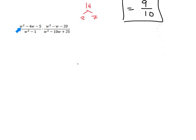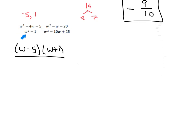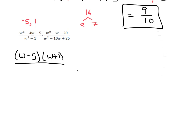Let's look at this first one: w squared minus 4w minus 5. We're looking for factors of negative 5 that are going to add to negative 4. Those factors are going to be negative 5 and positive 1. So this first one is going to factor into w minus 5 and w plus 1. The denominator, w squared minus 1, is a difference of squares, so that's going to factor into w plus 1 and w minus 1.